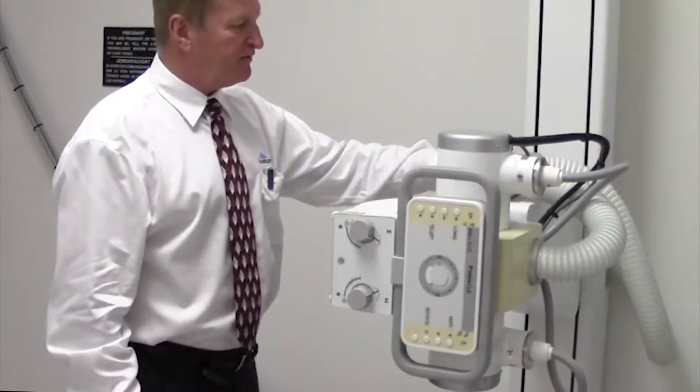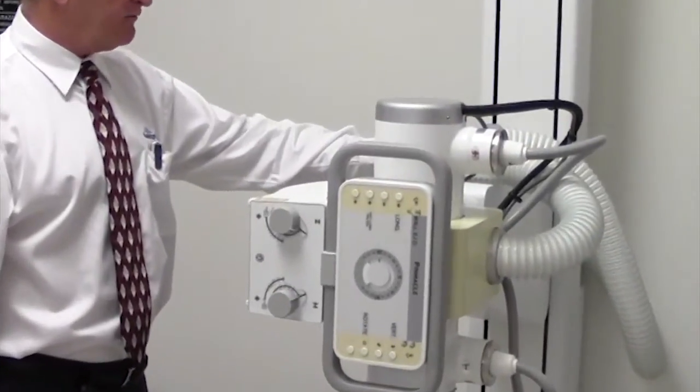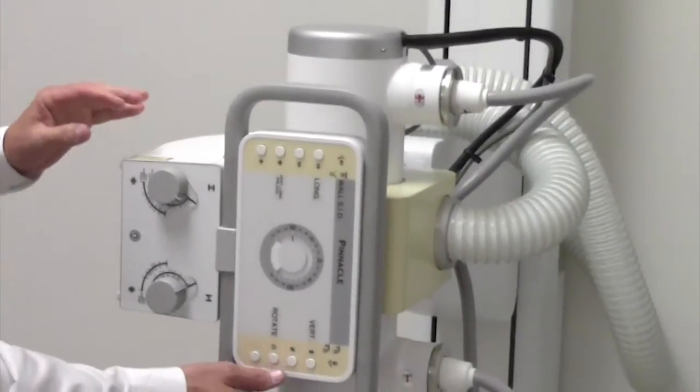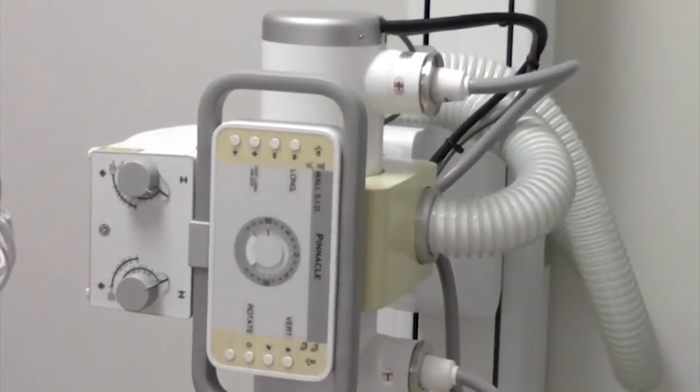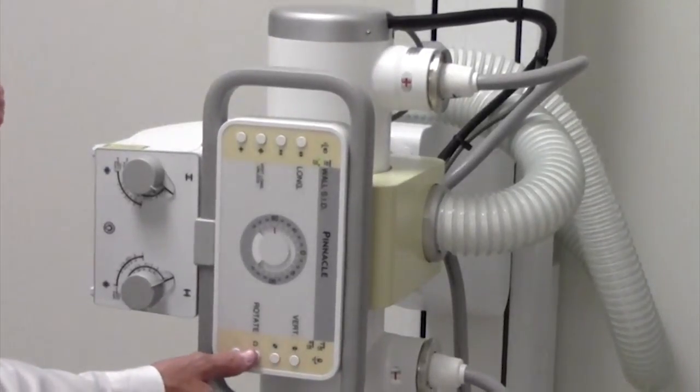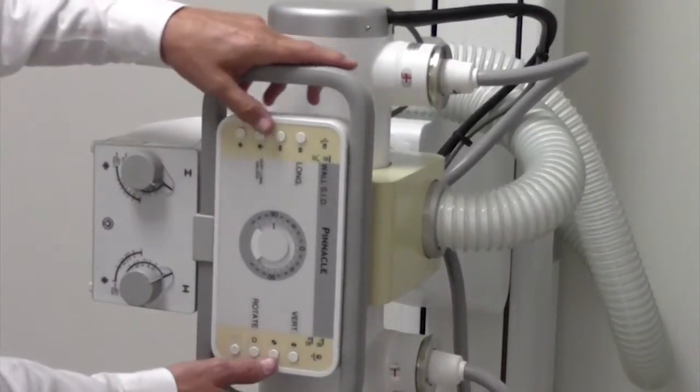The tube stand has all the cabling encased in our cable concealment system. Electronic locks that are on when the power goes off for safety. Longitudinal vertical rotation locks are all very conveniently located.